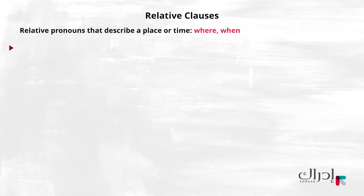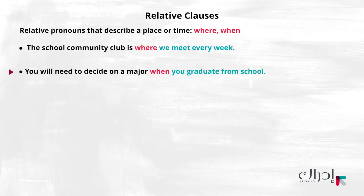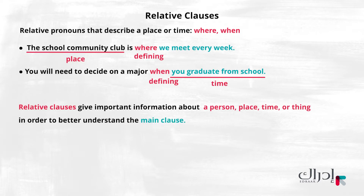Look at these examples: 'The school community club is where we meet every week.' 'You will need to decide on a major when you graduate from school.' The relative clause is important to understanding that the school community club is the place we meet every week, and that by the time you graduate, you will need to decide on a major. So, relative clauses give important information about a person, place, time, or thing in order to better understand the main clause.